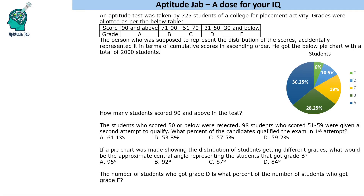The person who was supposed to represent the distribution of the scores had to show them in a pie chart — how many got A, B, C, D, E — and they represented it in terms of cumulative scores.